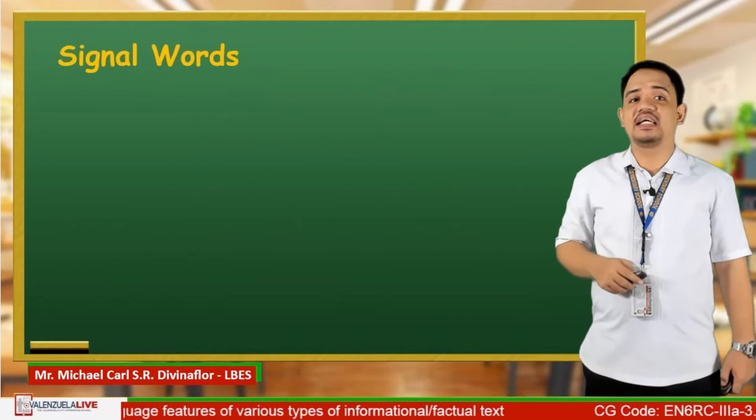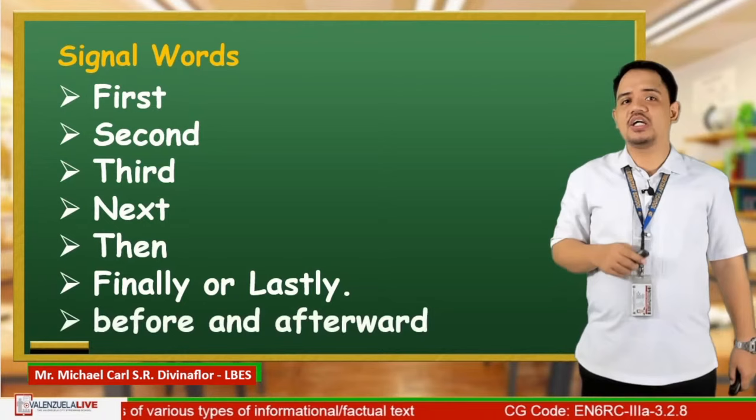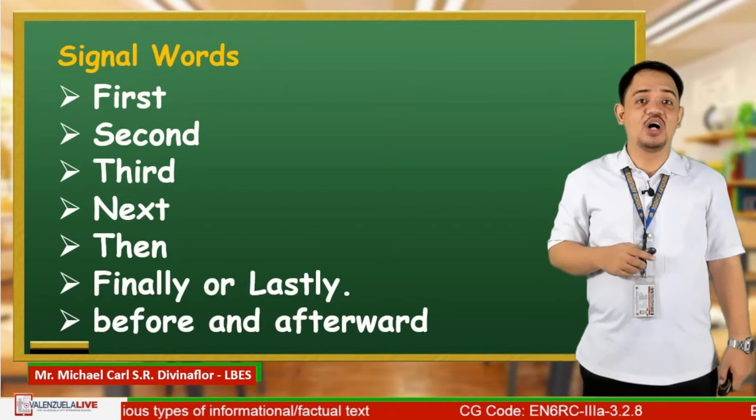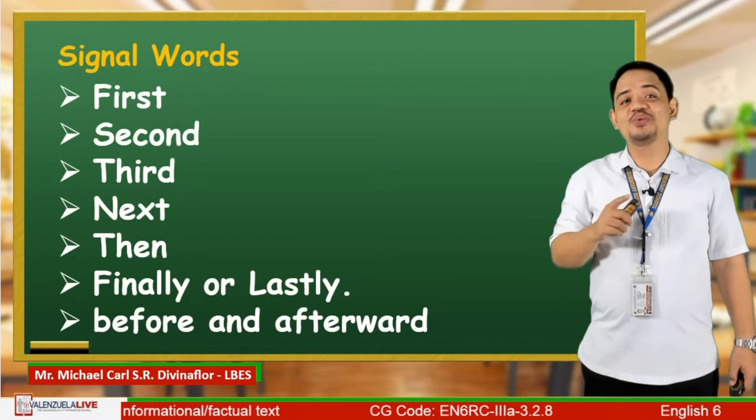In sequencing, we will usually hear these very important signal words: first, second, third, next, then, finally, or lastly. It also includes before and afterward, and other similar words that tell us about time. Sounds difficult? Well, in short, it only means to arrange things in proper order. So don't worry.